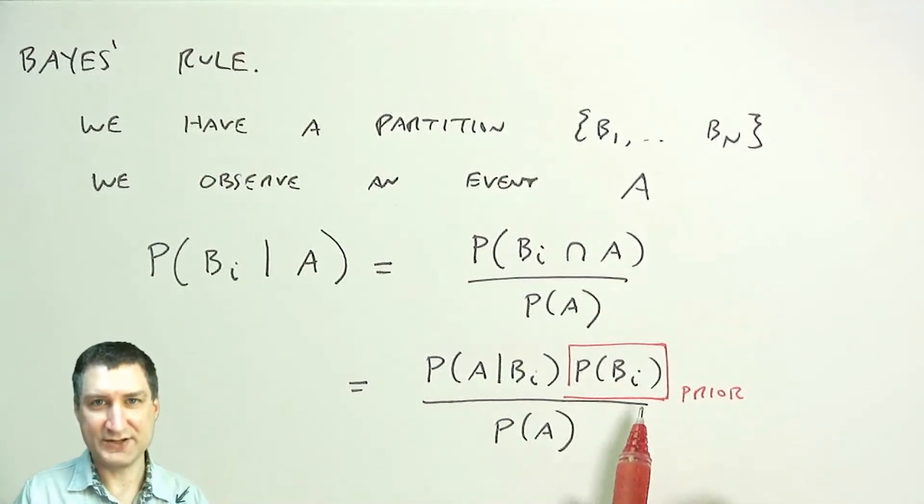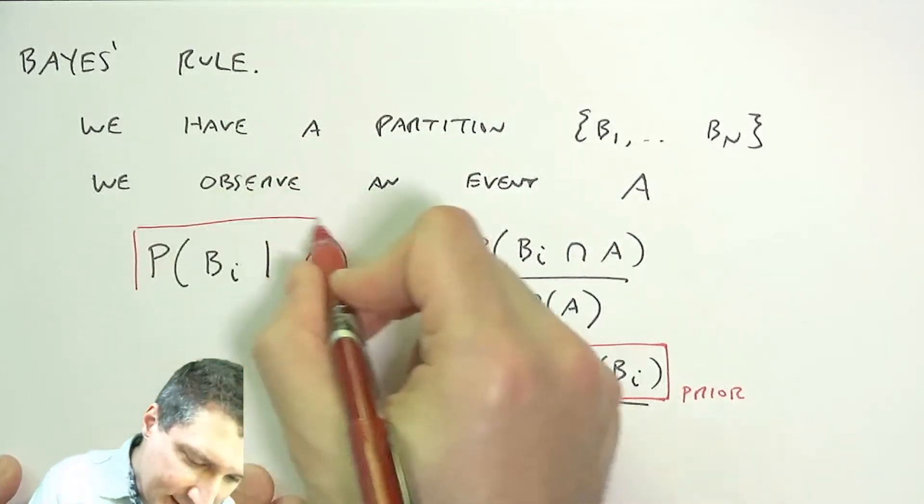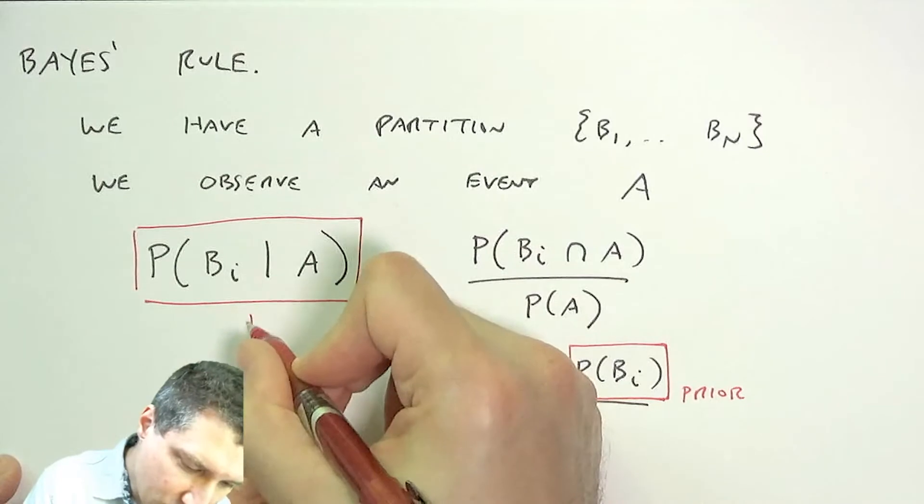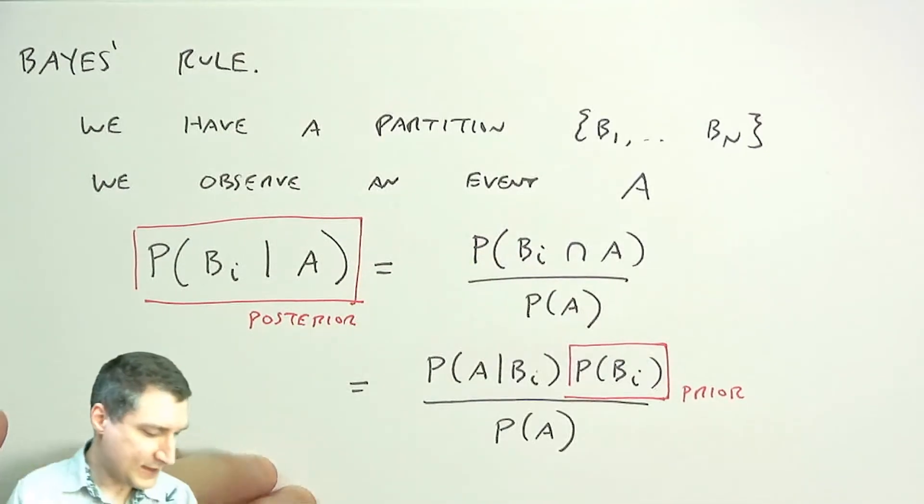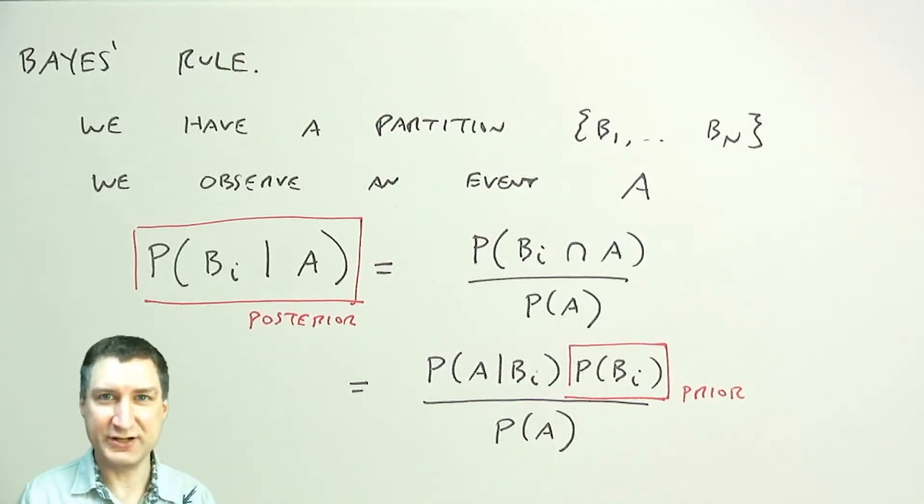This is called the prior probability. This is like saying, what is our prior probability of this event happening? Now I see A and that changes to what we call a posterior probability. How does my interpretation of the state depend on the observations that I see?